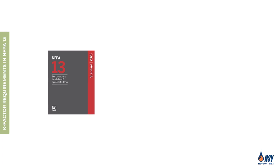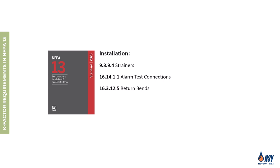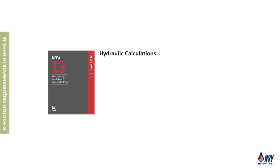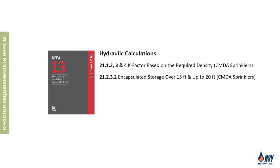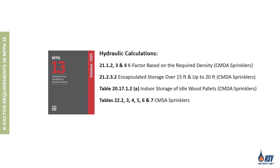NFPA 13 requirements regarding the K factor apply to both the installation and hydraulic calculation of fire sprinkler systems. From an installation perspective, the K factor influences several design elements including the need for strainers, the configuration of alarm test connections, the requirement for return bends, and the allowable distance below the ceiling for early suppression fast response sprinklers. In hydraulic calculations, the standard specifies the required K factor for CMSA sprinklers based on the design density. Additionally, in certain scenarios such as encapsulated storage over 15 feet and up to 20 feet in height, or the protection of indoor storage of idle wood pallets, the standard outlines specific K factor requirements for CMSA and ESFR sprinklers.